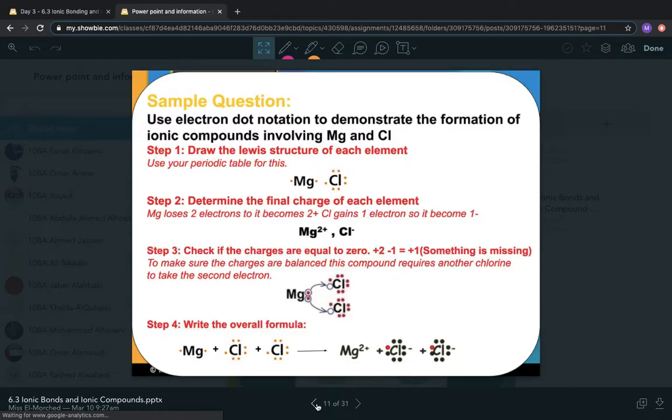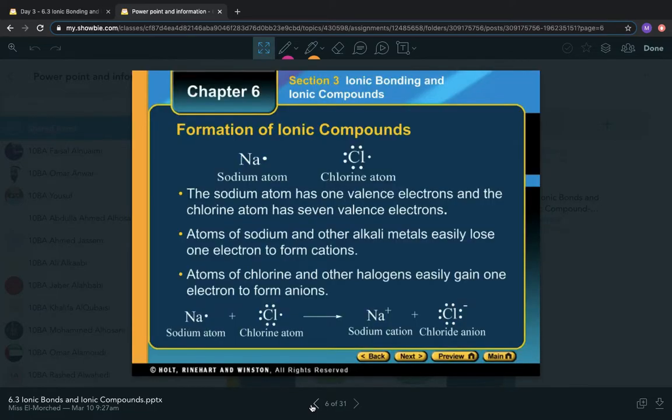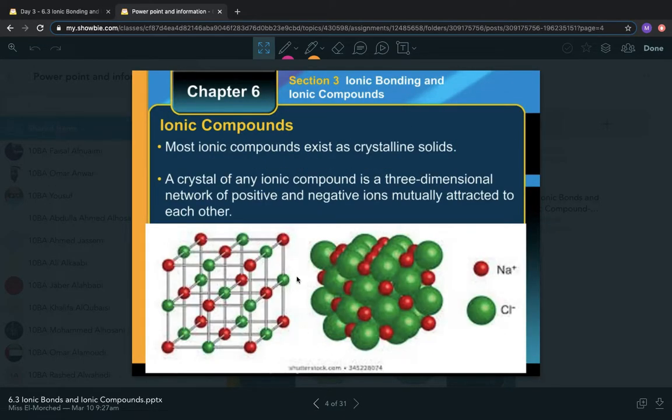Yesterday we talked about the basic idea that an electron is transferred from one element to the next, which causes one element to become positively charged and the other negatively charged. We also talked about their basic structure—they form these massive things. They all come together because of their charges. The positives and negatives are sitting next to each other, all interacting together in this type of situation.